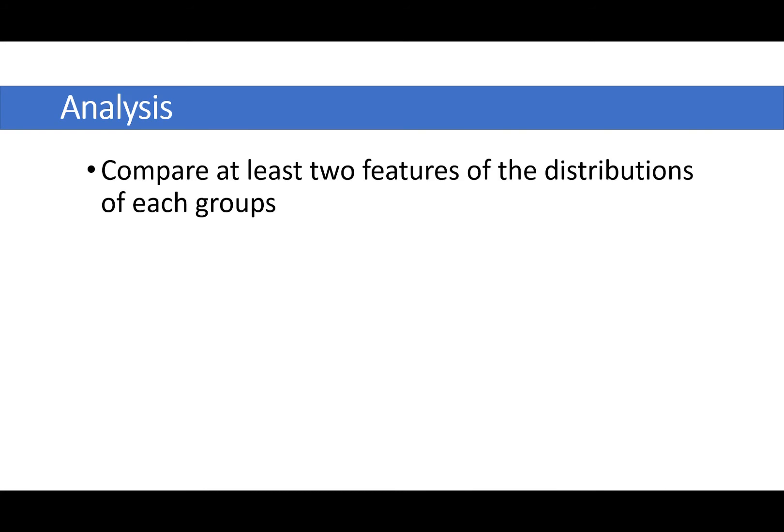So the fourth section of your project is analysis. You've made the graphs and you want to talk about what they are showing you. So you need to compare at least two features of the distributions of the groups that you've been investigating. And you should look at this in three stages.